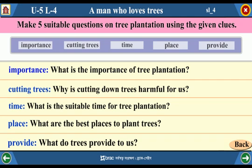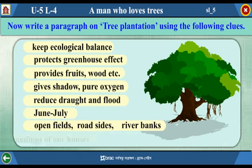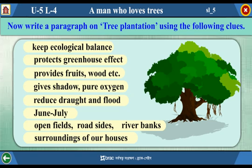What do trees provide to us? Now write a paragraph on tree plantation using the following clues: keep ecological balance, protects greenhouse effect, provides fruits, wood, etc., gives shadow and pure oxygen, reduce drought and flood. Suitable time: June to July. Places: open fields, road sides, river banks, surroundings of our houses. Thank you.